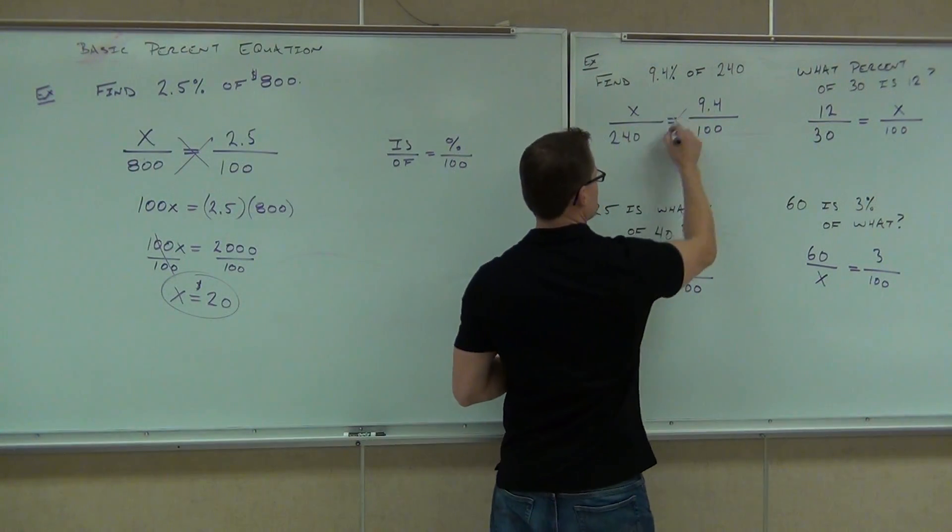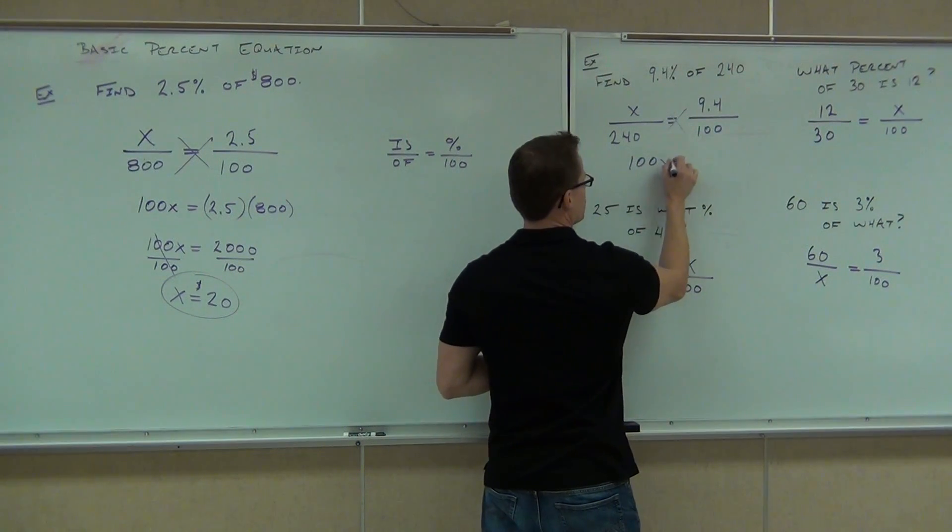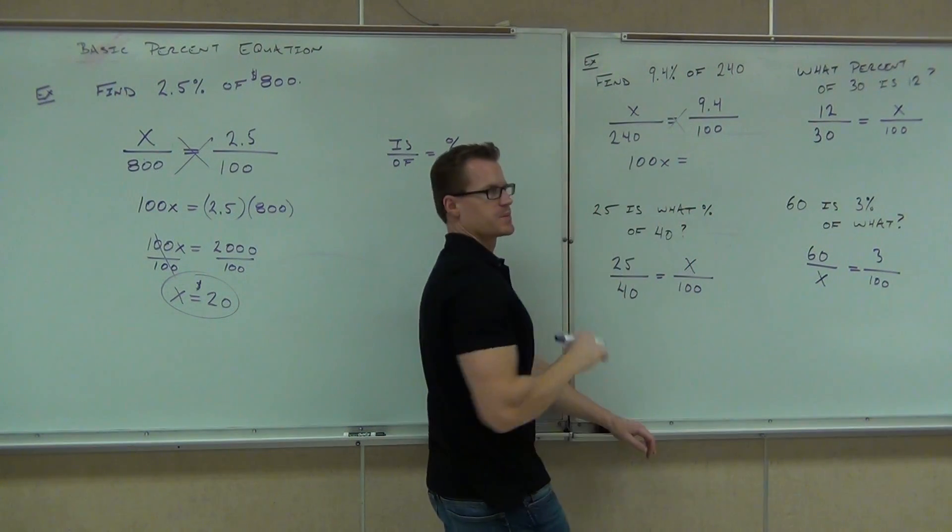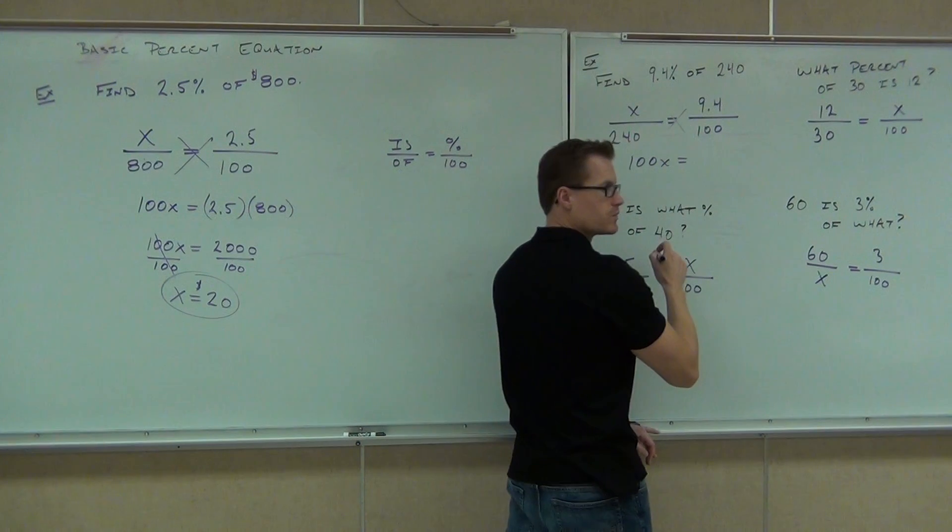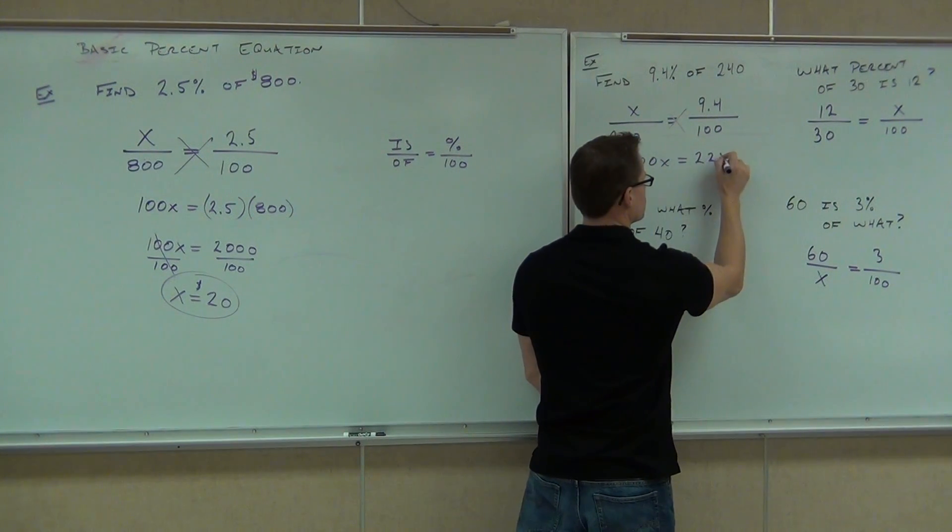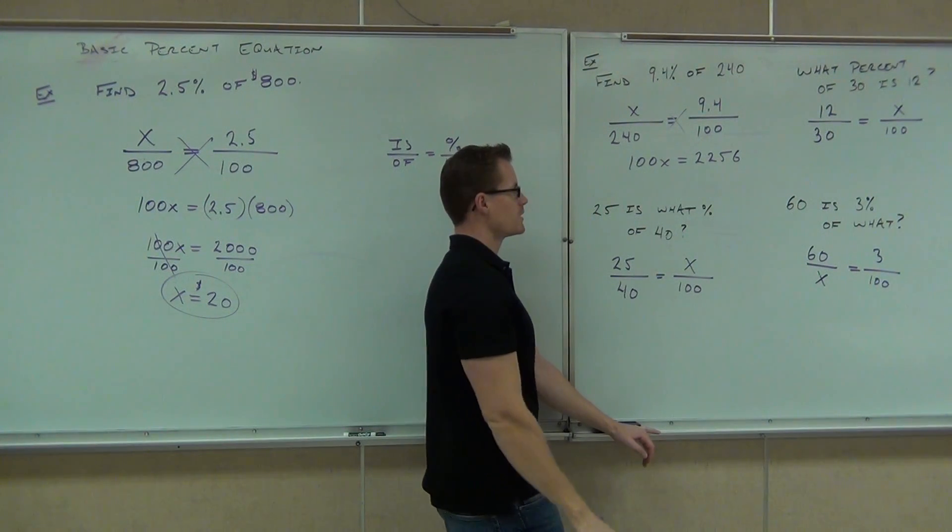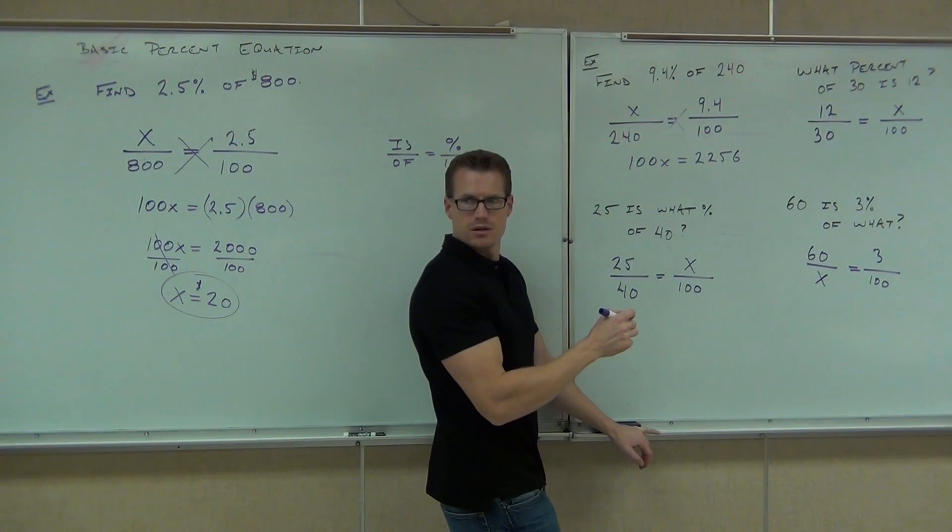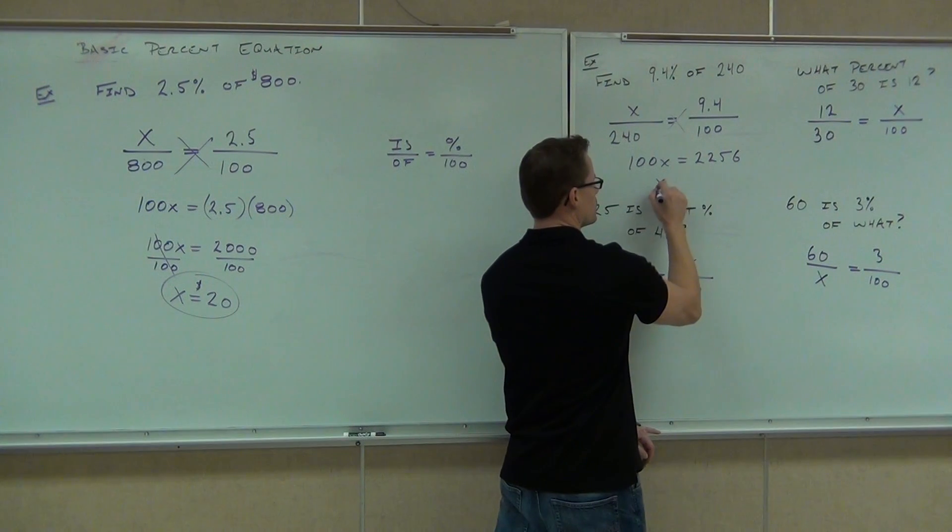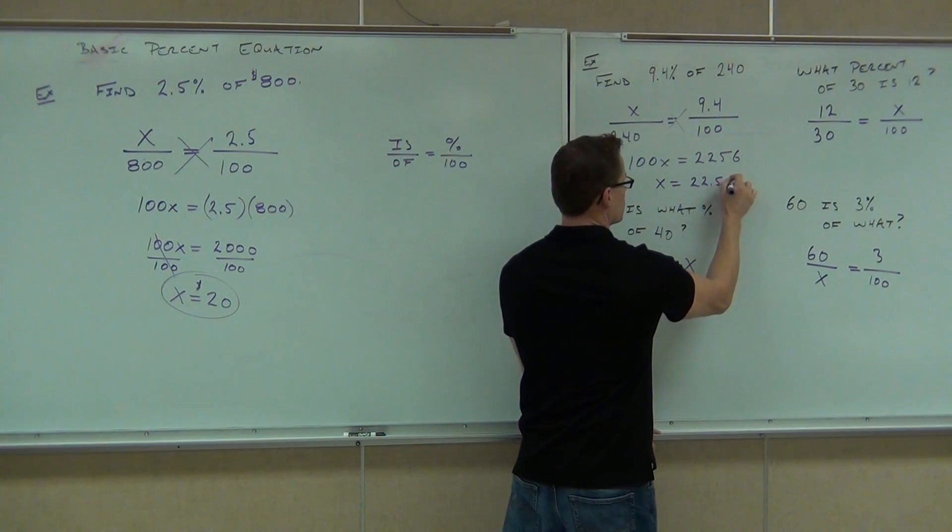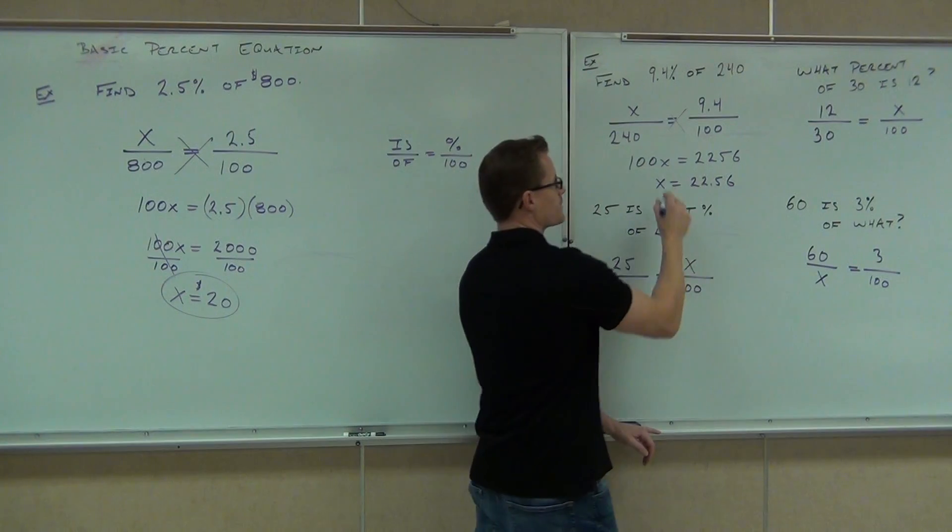So here we're going to get 100X equals—what's 240 times 9.4? 2,256? Yeah. Then if I divide by 100? 22.56.